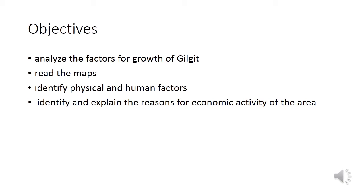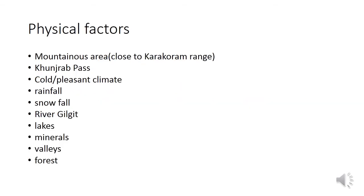Physical factors include that it is a mountainous area close to the Karakoram Range. The land route Khunjerab Pass is present, connecting China with Pakistan — it is the route between the two mountains. The climate is cold and pleasant, with monsoon rainfall in summers and snowfall in winters.